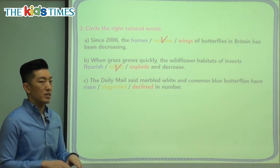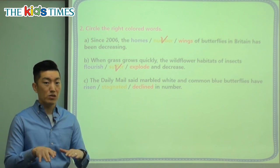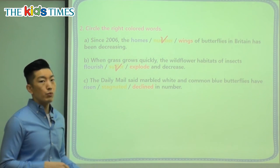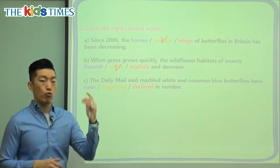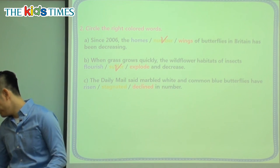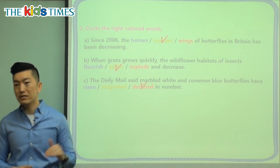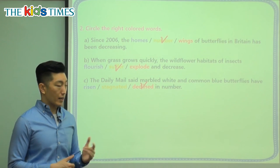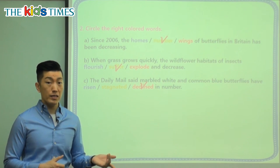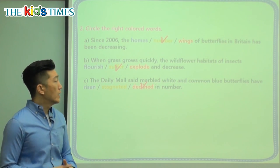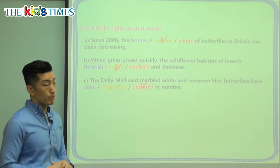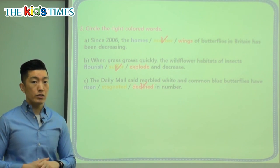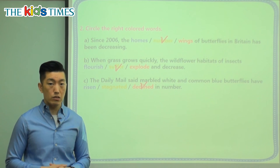Stagnated means it kind of just stays the same — it doesn't grow, it doesn't drop. We know that's not the case, and we know it's not rising. So the correct answer is declined in number. The number of the marbled white and the common blue butterflies have gone down in Britain, and once again, climate change is one of the main reasons.